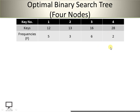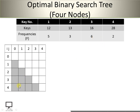To construct the Optimal Binary Search Tree using the formula, I will require a cost matrix. This cost matrix is always of size (number of keys + 1), so for 4 keys, the size is 5×5 — 5 rows and 5 columns. Rows are represented by i and columns are represented by j.